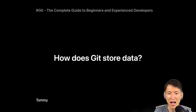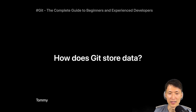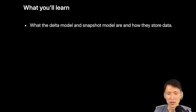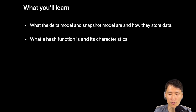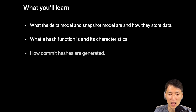To properly understand how Git operates, it's important to know how Git stores data. In this lecture, we will explore how Git stores data. After taking this lecture, you will learn the following: what the delta model and snapshot model are and how they store data; what a hash function is and its characteristics; and how commit hashes are generated.